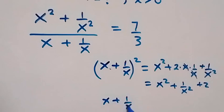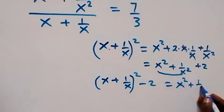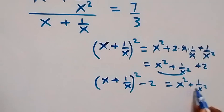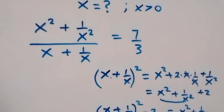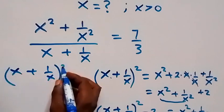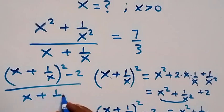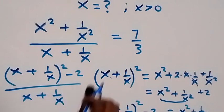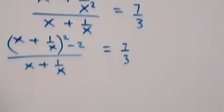Taking the 2 to the other side, we get x plus 1 over x, all squared, minus 2, equals x squared plus 1 over x squared. So instead of writing x squared plus 1 over x squared, we can equally write x plus 1 over x, all squared, minus 2. The expression up top becomes x plus 1 over x, all squared, minus 2, divided by x plus 1 over x, which equals to 7 over 3.